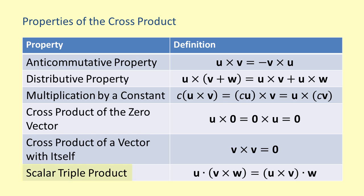The last property is the scalar triple product property. This property states that the dot product of one vector u and the cross product of v with w is equal to the dot product of the cross product of u with v and the vector w. The order here is important because, as we saw in the first property, the cross product of u and v is not the same as the cross product of v and u.